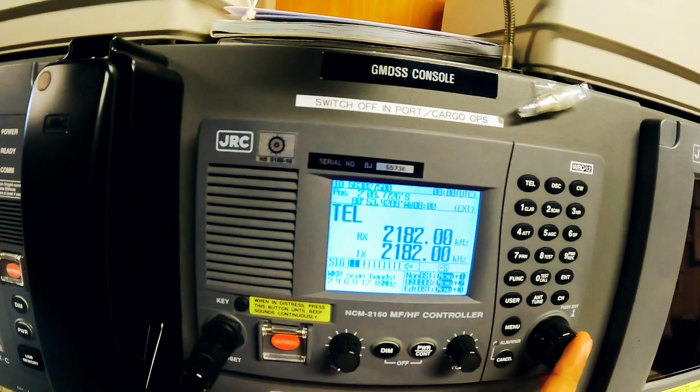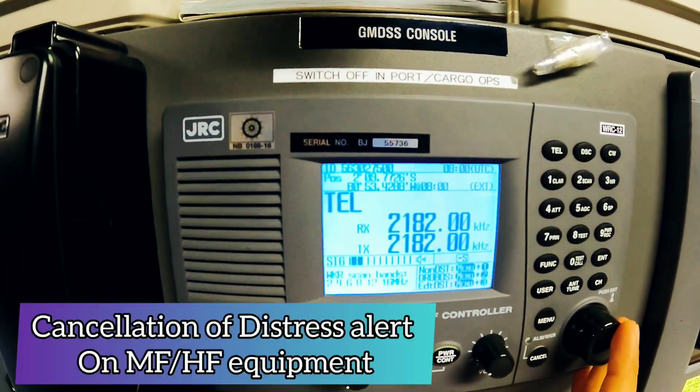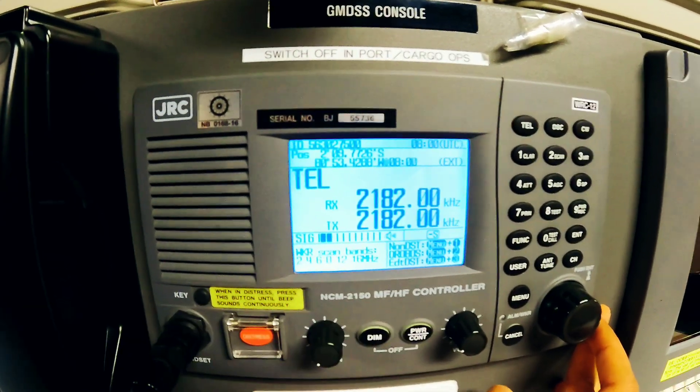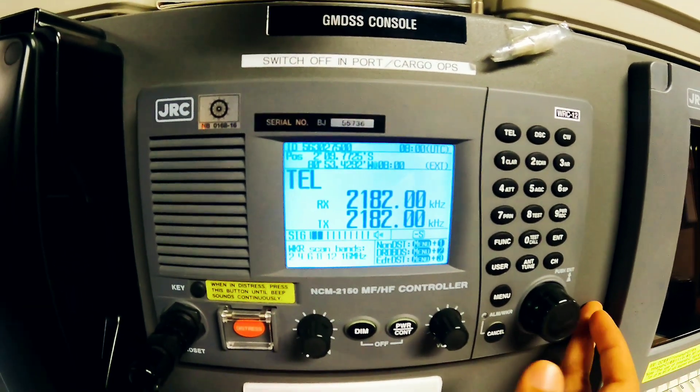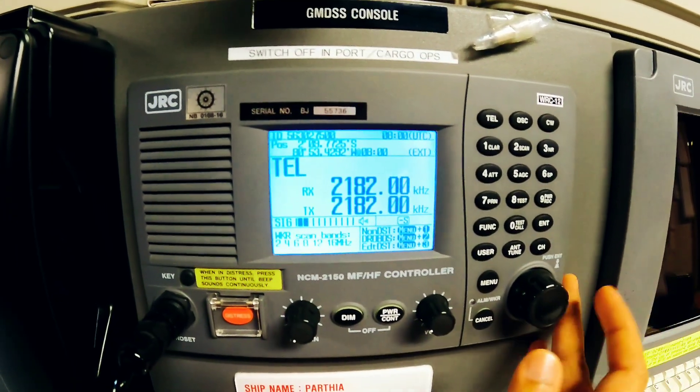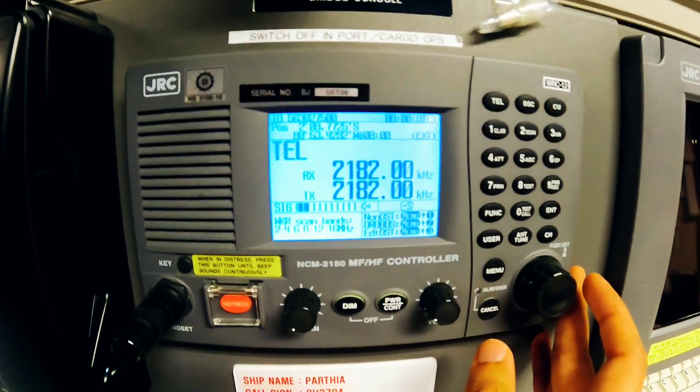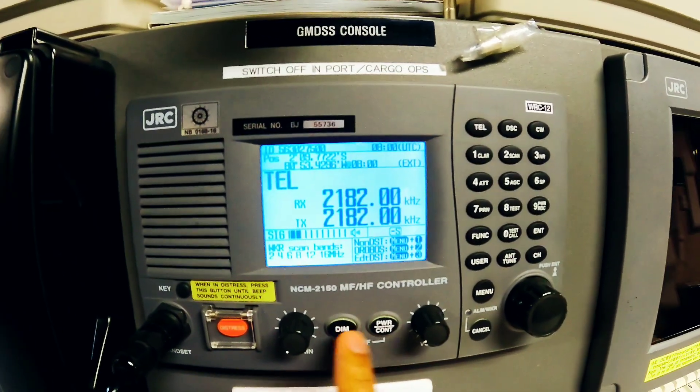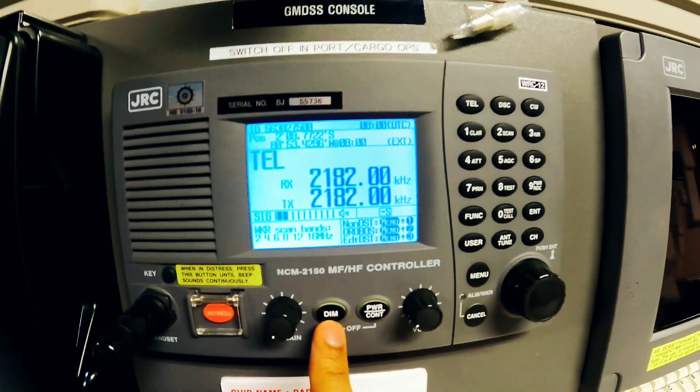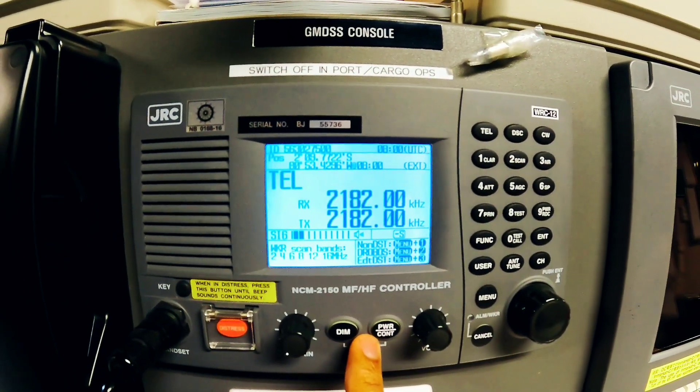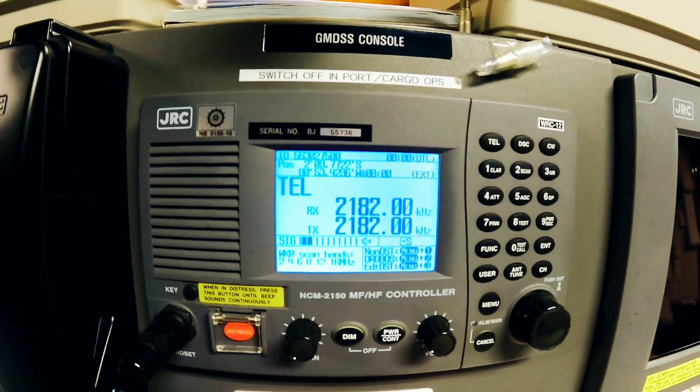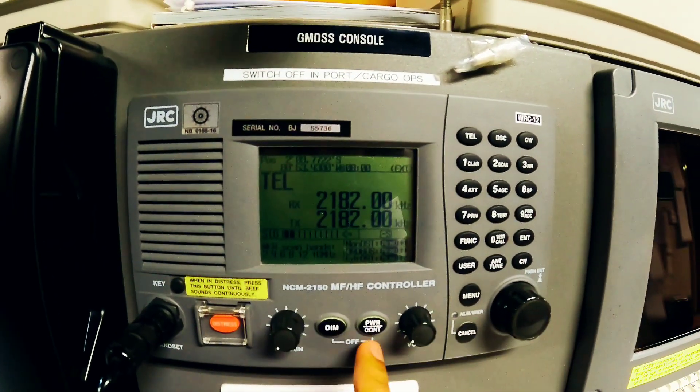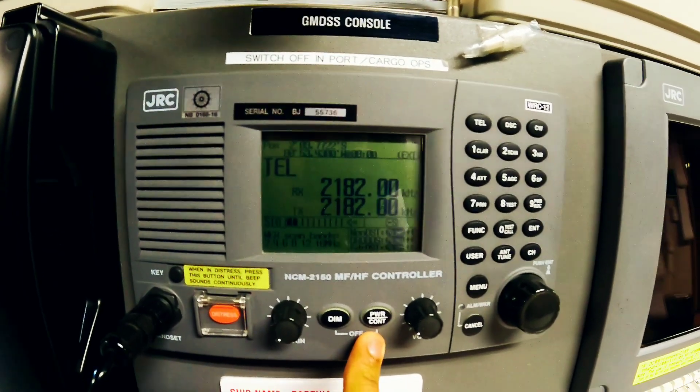Now if you have to cancel your alert, let's say you have accidentally activated the distress alert or it's activated by mistake, which is a false alert, and you have to cancel it. The first thing you have to do is stop the transmission. For stopping the transmission, you can see here that you have to press DIM plus power button to stop the transmission. Basically, it will switch off the MFHF equipment. Once the transmission is stopped, now you have to switch on again.